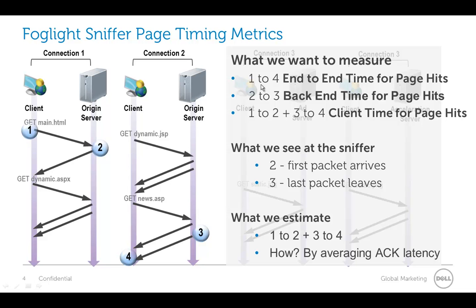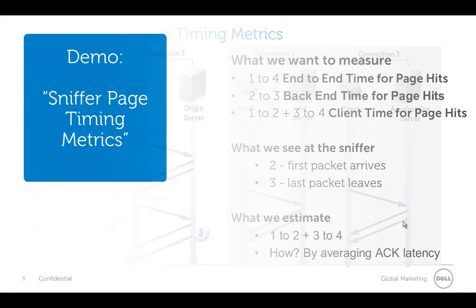What I really see is I'm looking for the one-to-four time — the end-to-end time. We're also looking for the two-to-three time, which gives me how long it spent in the back end. We also want the one-to-two and three-to-four, which gives us our client time. The one-to-two is the trip there, and three-to-four is the delivery back. Since we only see points two and three directly, we have to estimate the other pieces by looking at acknowledgement packets. That's a good review of our first lesson — if you want more details you can go back to the 101 video.